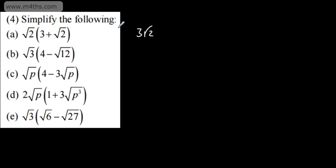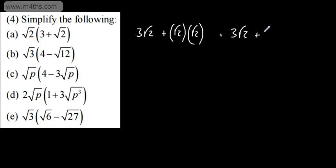On the first one, we've got the root of 2 multiplied by the quantity 3 plus the root of 2. I'm going to multiply the root of 2 by 3 and the root of 2 by the root of 2. I'll write root 2 times 3 as 3 root 2 for cleaner notation. Root 2 multiplied by root 2 gives us 2, since root A multiplied by root A gives us A. So we can write this as 3 root 2 plus 2 — expanded and simplified.